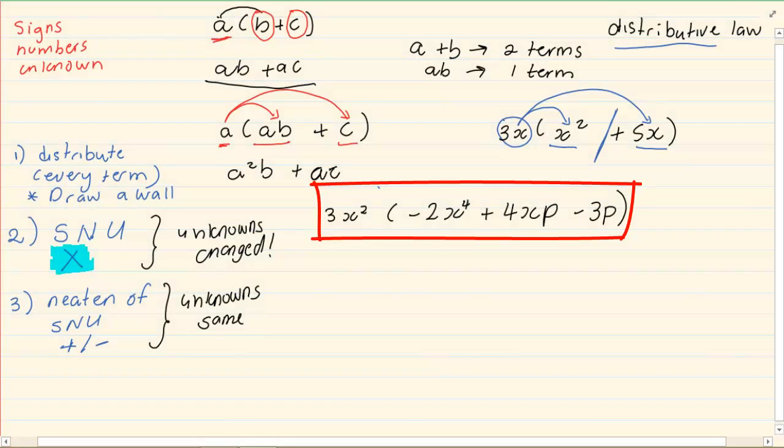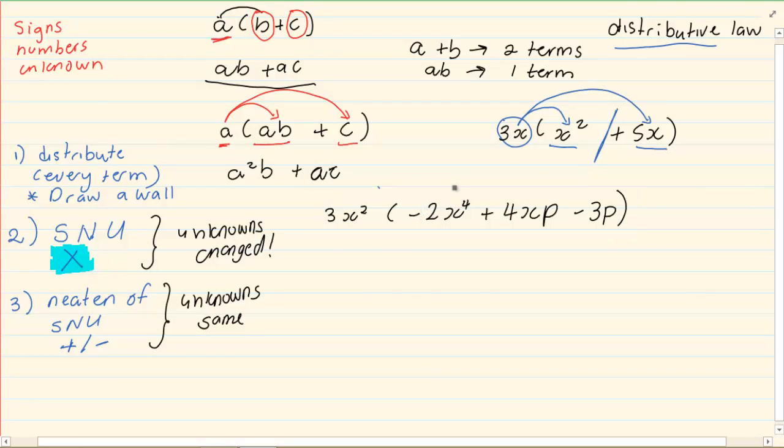Let us do the following example. We have 3x squared into minus 2x to the power 4 plus 4xp minus 3p. So first we are going to put in our walls. Now we are going to distribute. So we are going to take the outside term and we are going to distribute it with every term inside.